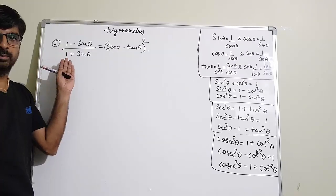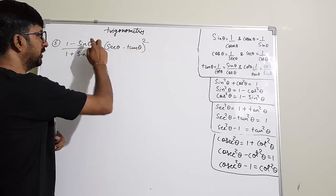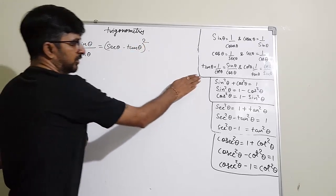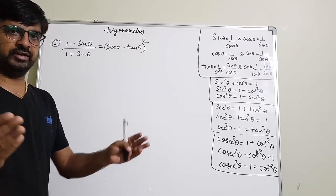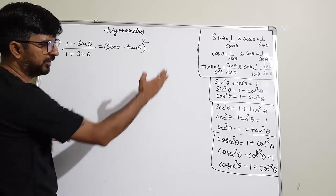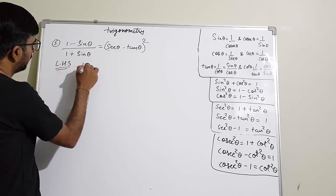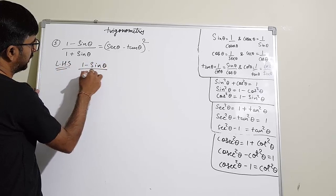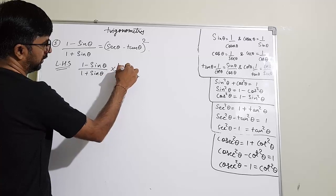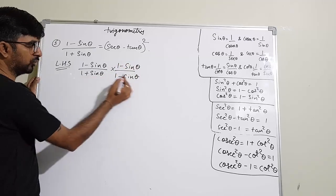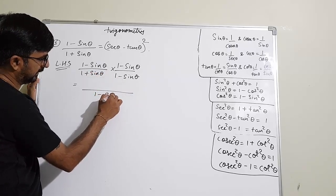Now let us move to question number 3. Again we have 1 minus sin θ upon 1 plus sin θ equals to sec θ minus tan θ whole square. Here single terms are there, so we cannot directly use the identity. Whenever this type of question comes, we need rationalization to convert it into a square so we can use identities. Multiply numerator and denominator by 1 minus sin θ.